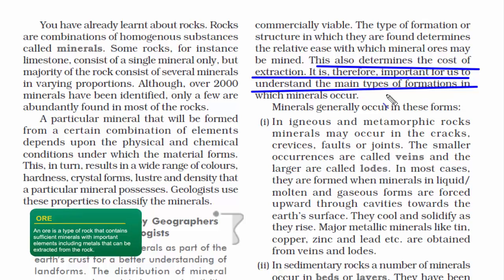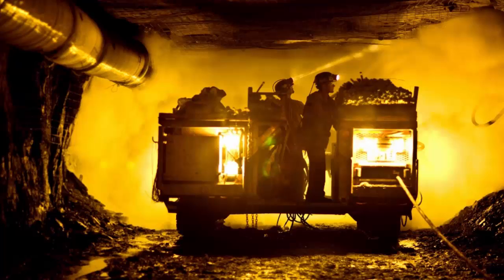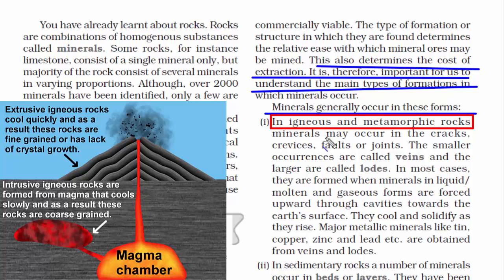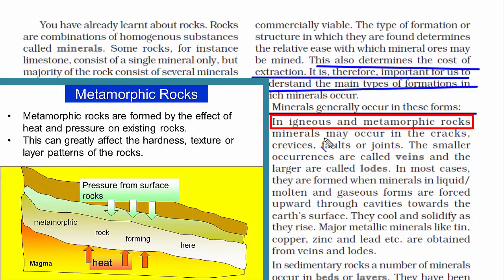We know that everything we want in this world has a cost associated with it — nothing is free. Before extracting these minerals, it is important to find out where they are embedded in the rock, their location, and how they look. Because you don't want to end up mining the wrong place. The cost of extraction is not cheap. Minerals generally occur in these forms. The first is in igneous and metamorphic rocks. Igneous rocks are formed through the cooling and solidification of magma or lava. Granite is a fine example.